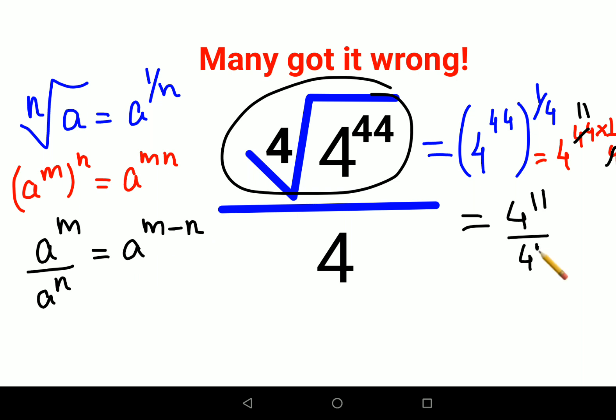So here the index is 1. Therefore the final simplification will be 4 raised to 11 minus 1, that gets you 4 raised to 10.